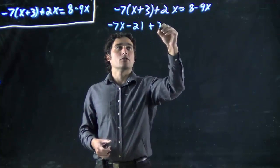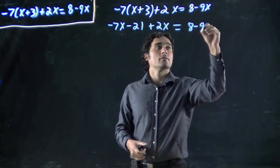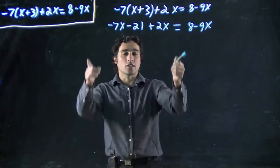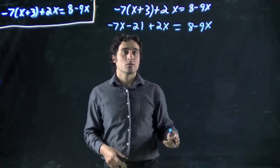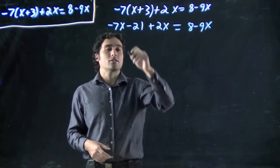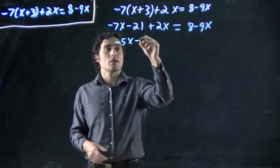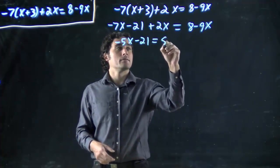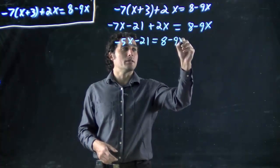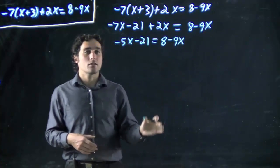And I've still got my good old 2x here. And this side also hasn't changed. Great. I can start combining terms on this side. We'll go very methodically through this. Combine what is minus 7x plus 2x? Well, it's minus 5x. We've still got minus 21. Later on, you might start jumping steps and doing a few things in line together, but we'll take it nice and slow.